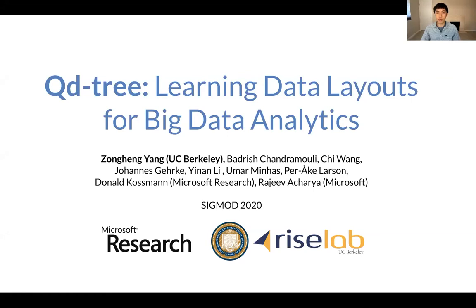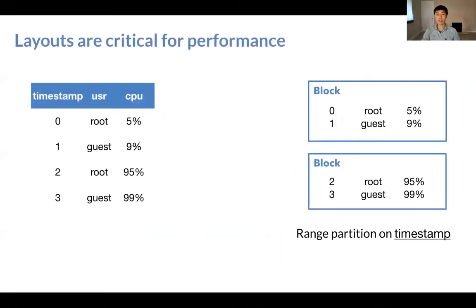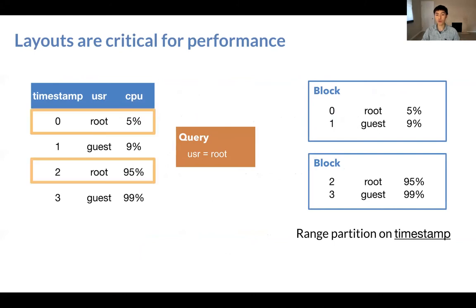This is joint work with collaborators from Microsoft Research and Microsoft. Consider this dataset and a range partition layout. Let's say we have an analytics query that looks at all records with user equals root. Now because the records required by this query are scattered around two blocks, this query is forced to read both.